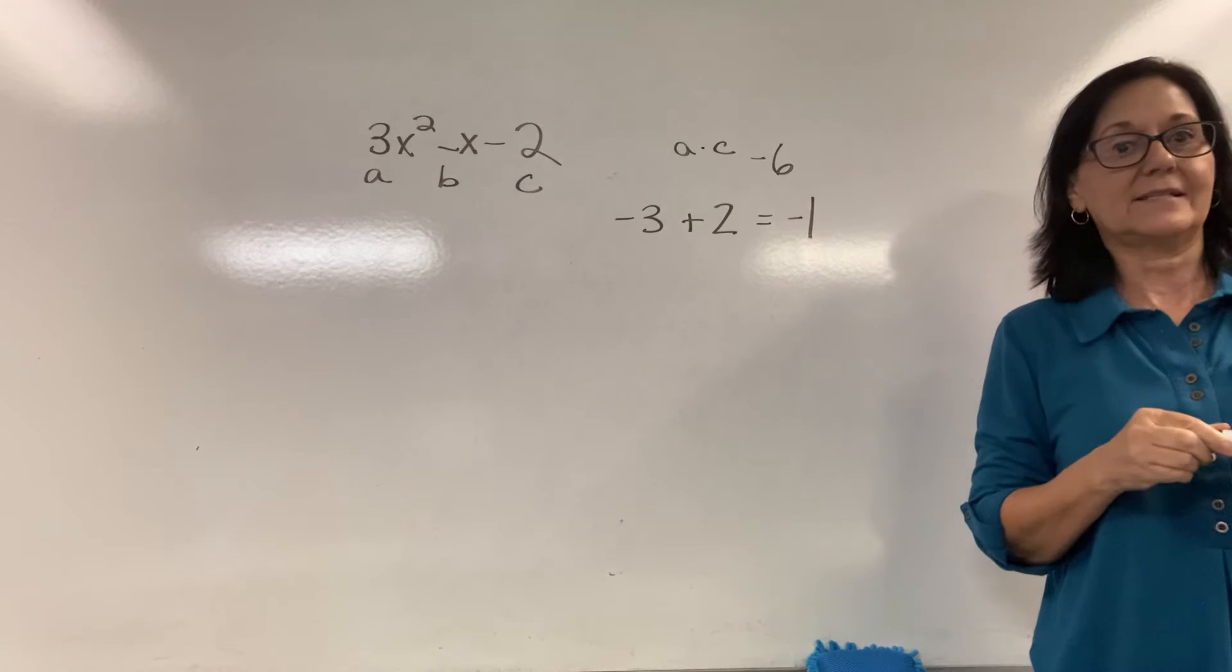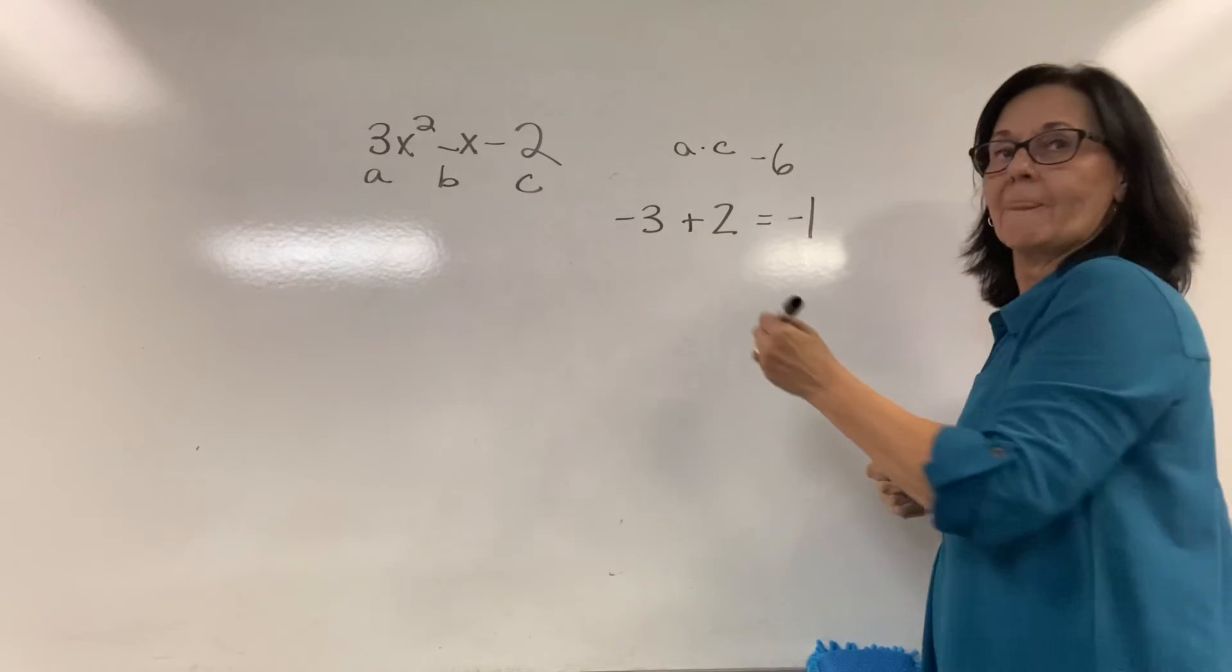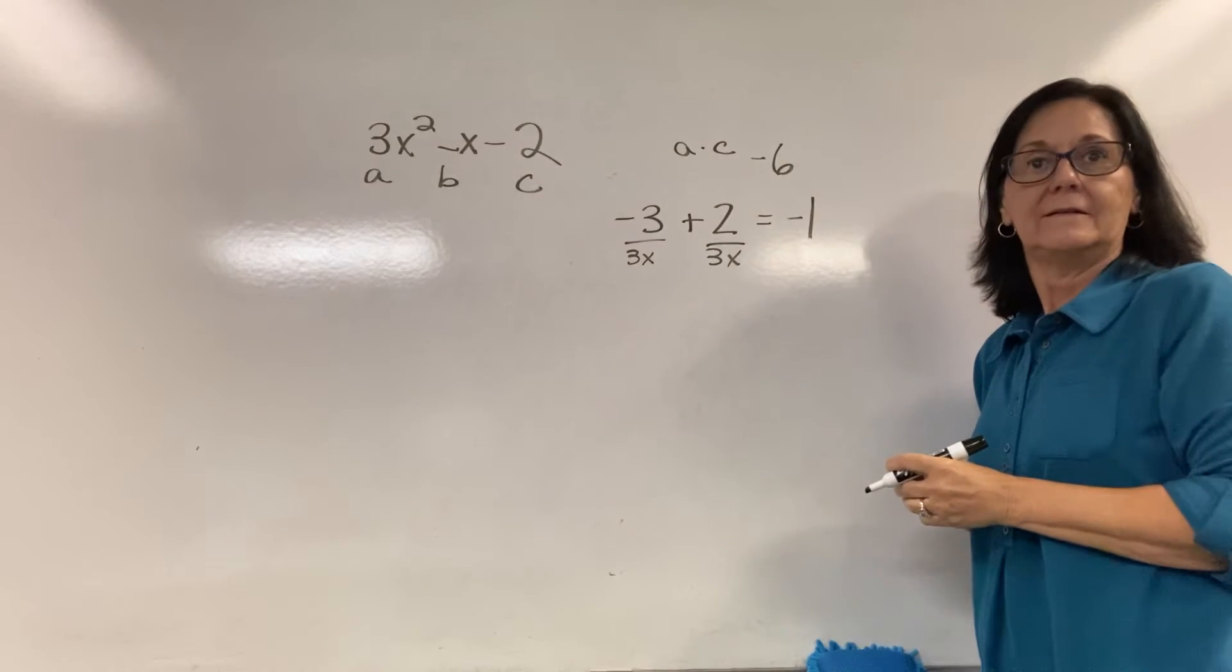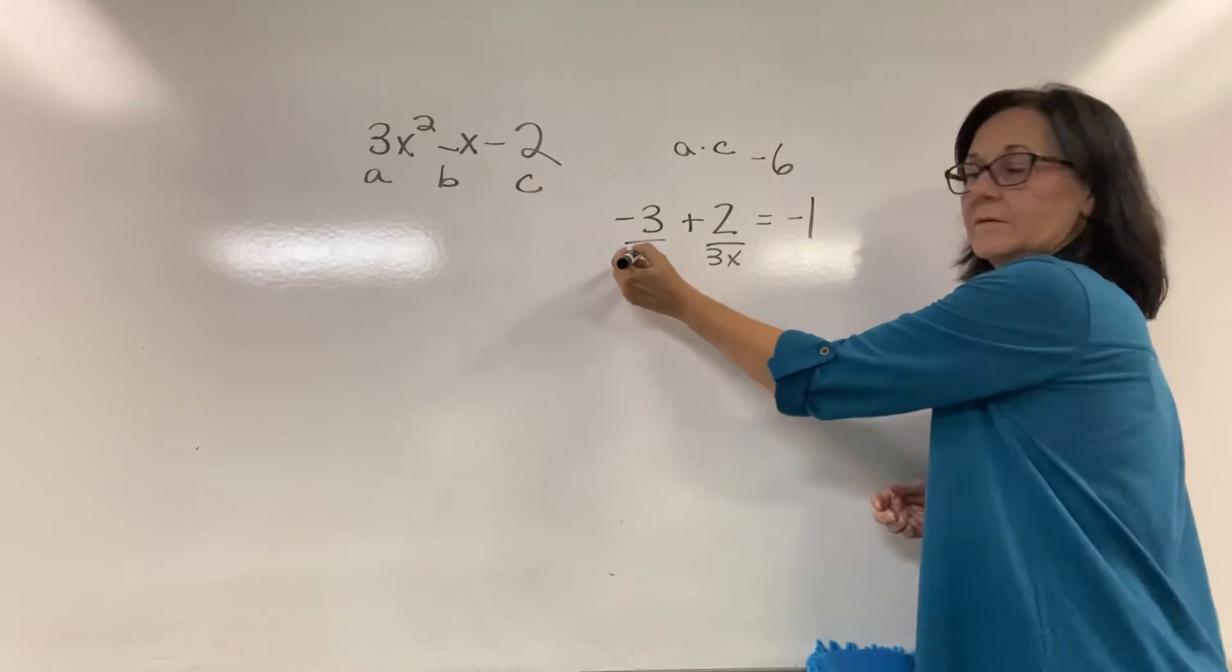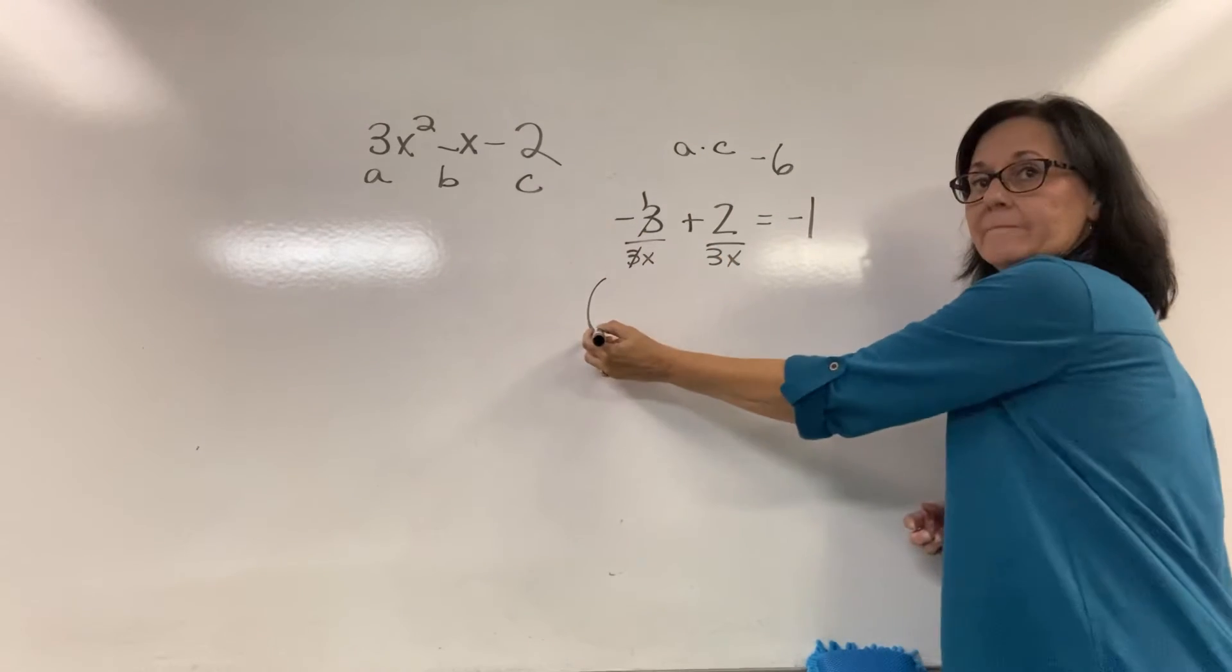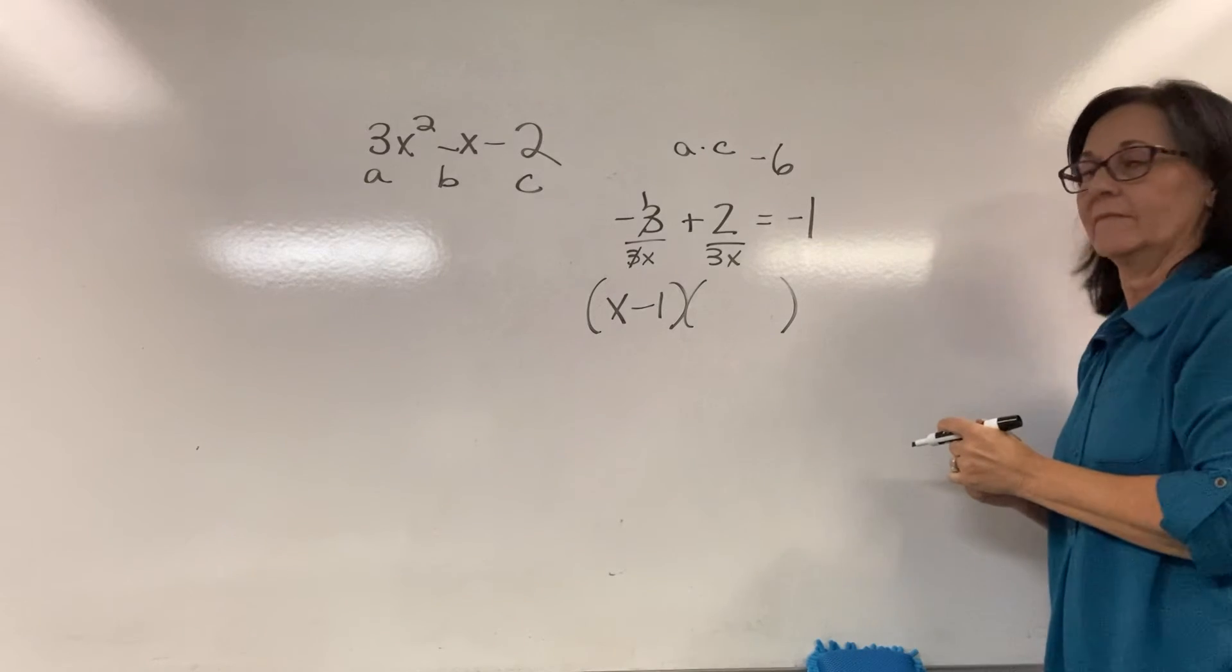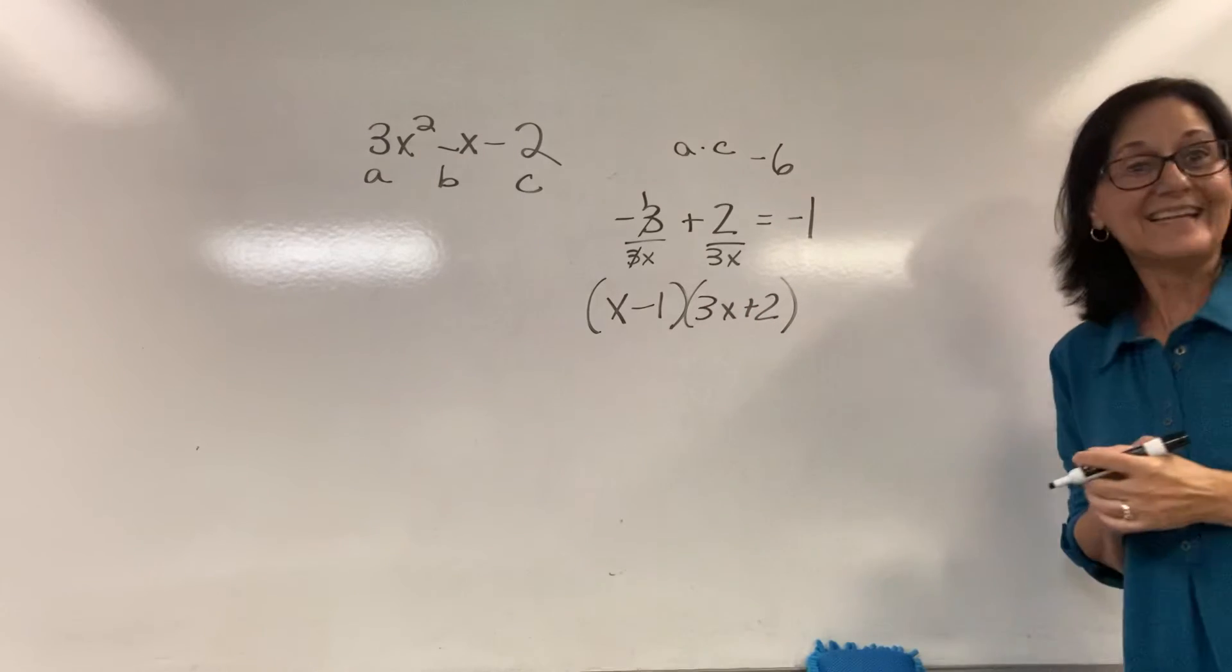What's next? You put the a value with x under the factors. So 3x under each. And then we simplify. So this first one's going to be x minus 1. And that one is 3x plus 2. That's exactly right. Excellent.